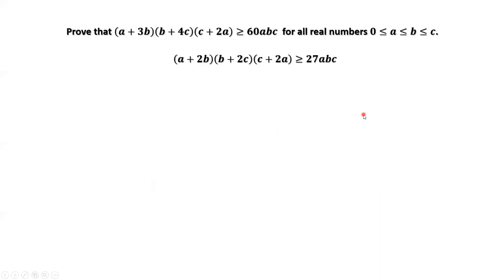This is a very important result. What's the difference between this result and the result we need to prove? Here, that's 2b but we need 3b. Here is 2c but we need 4c. The last term is the same. Here is 60, here is 27. One condition we did not use yet is this condition: c ≥ b ≥ a. Now we are going to use this condition to prove this inequality.